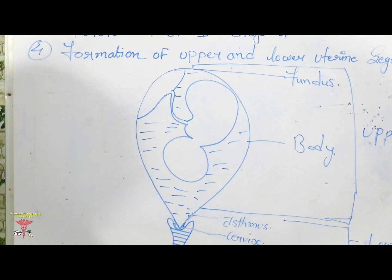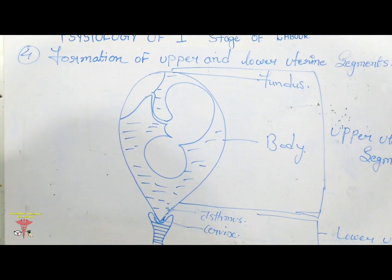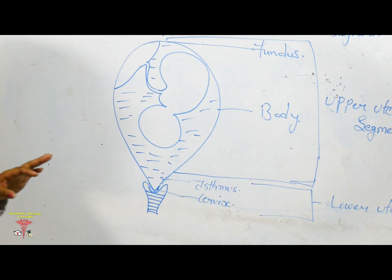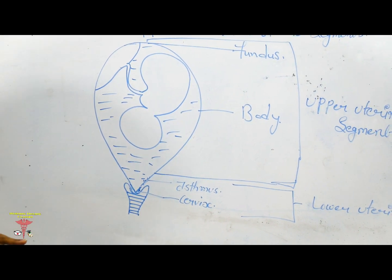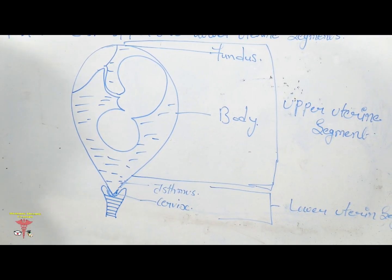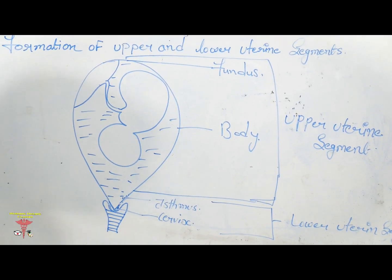The uterine fundus elongates more and reduces its transverse diameter. The lower uterine segment consists mainly of the isthmus and cervix.